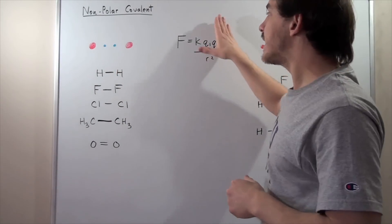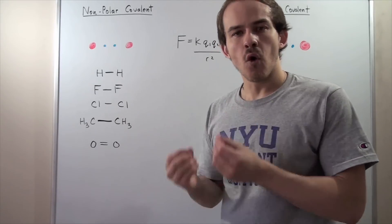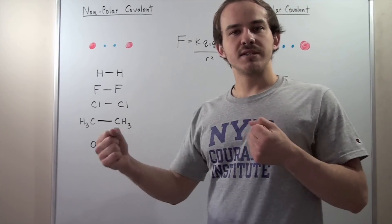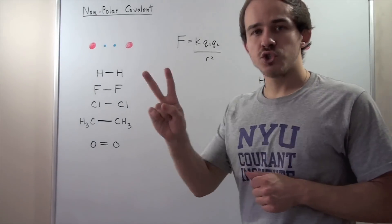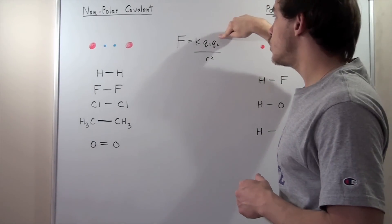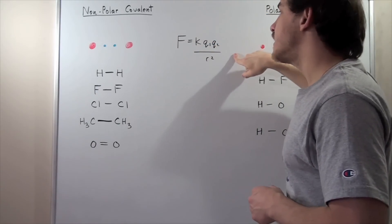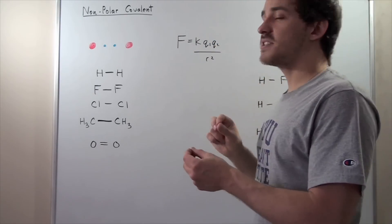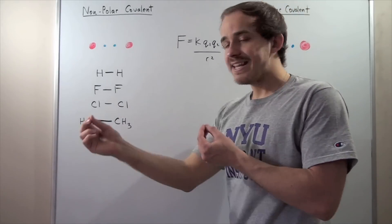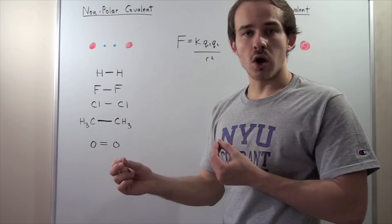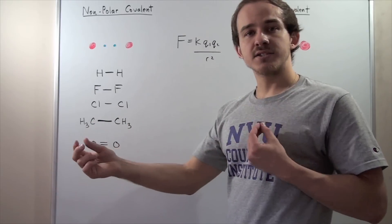Let's look at Coulomb's Law for a second. Coulomb's Law gives us the force felt by two charges some distance apart. It states that if we have two charges q1 and q2, we multiply them together, multiply by the constant k, and divide by the distance between their centers of charge squared — and we get the force that each charge feels due to the other. Remember, plus charges repel and plus and minus attract.